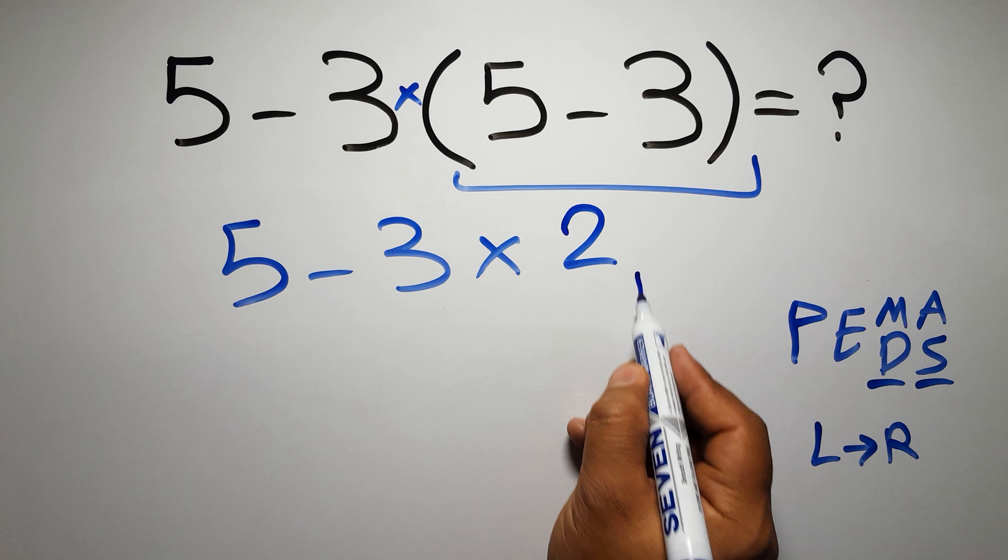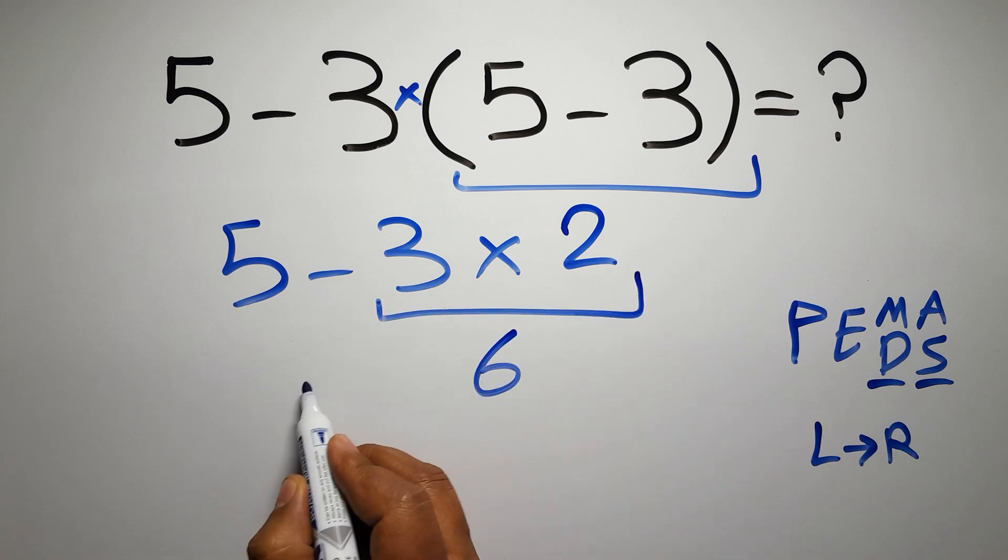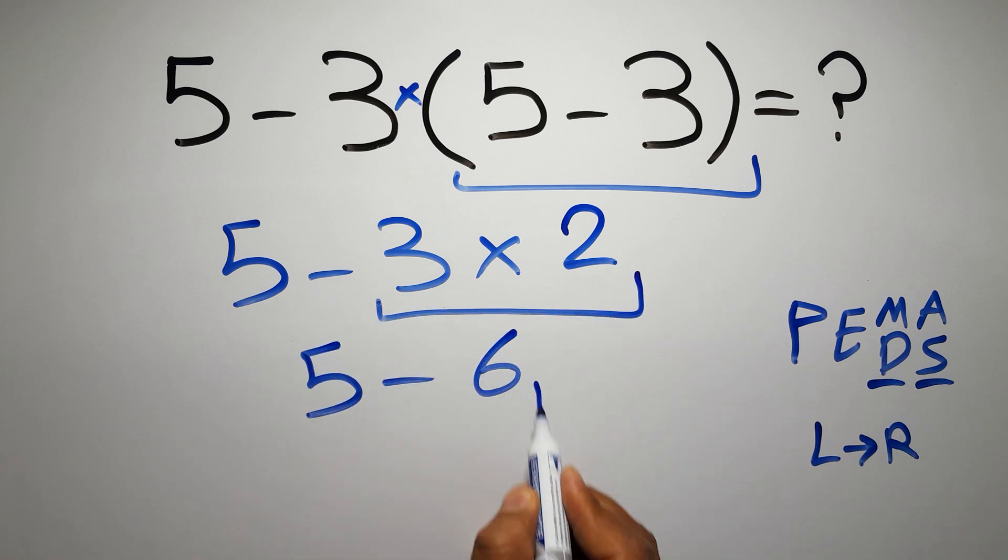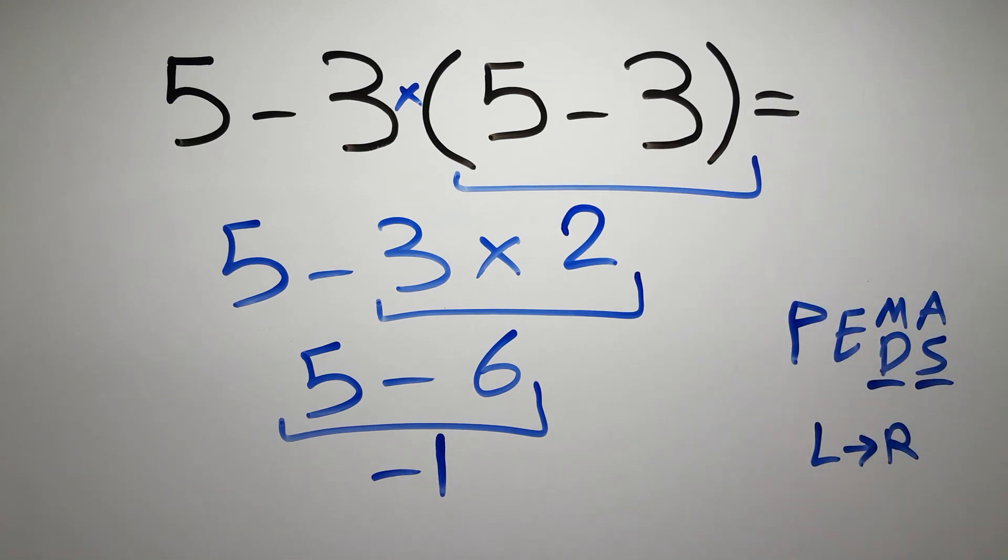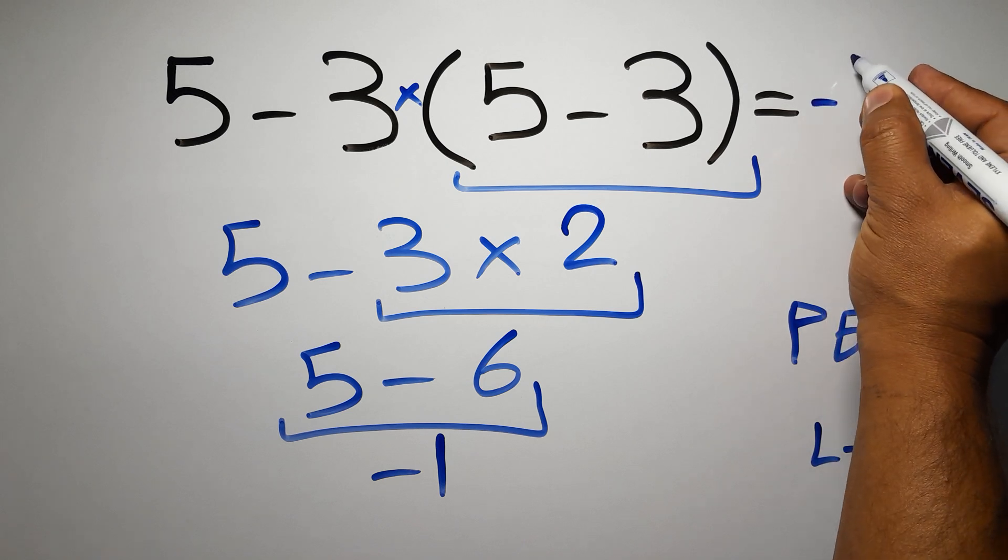3 times 2 is just 6. So, 5 minus 6 gives us negative 1. And this is our final answer to this problem. The correct answer is negative 1.